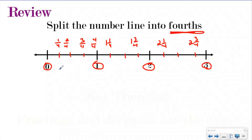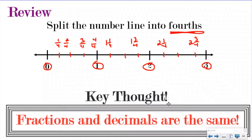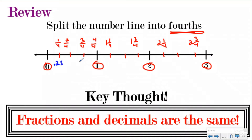You can also split coordinate planes into fractions as well, because it's just two number lines that make up our two-dimensional plane. The other important thing to remember is our key thought, which is fractions and decimals are the same thing. They're both a different way to write the same value — they are parts of a whole. So instead of writing one-fourth, I can think about this as one-quarter, which would be twenty-five hundredths. One-half would be five-tenths or fifty-hundredths. Three-fourths would be seventy-five hundredths. Equivalent decimals.